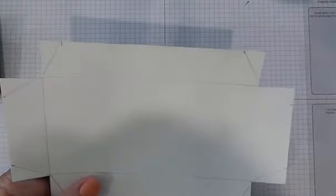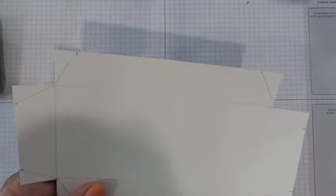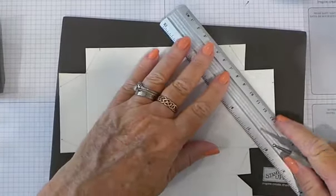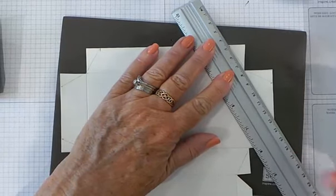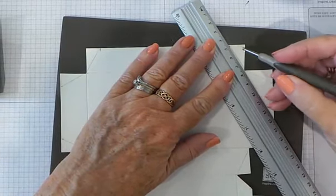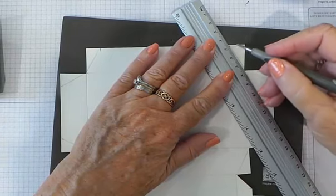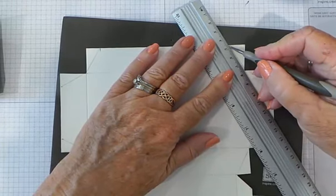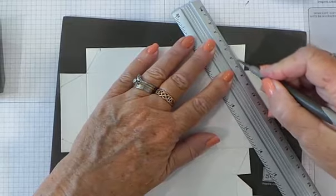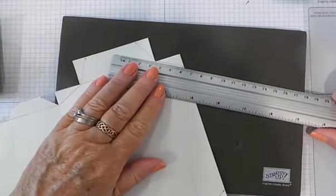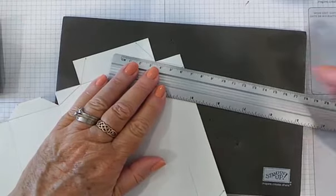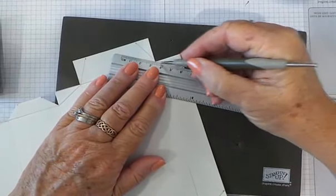You're going to score it and I just brought in my mat, my stamp and pierce mat, not the one I use for stamping on. And you're just going to join all those points that you marked and you can do it with your scoring tool. I just did it in pencil so you could see what I was doing and you just go around then with your ruler and your scoring tool and join those points up.